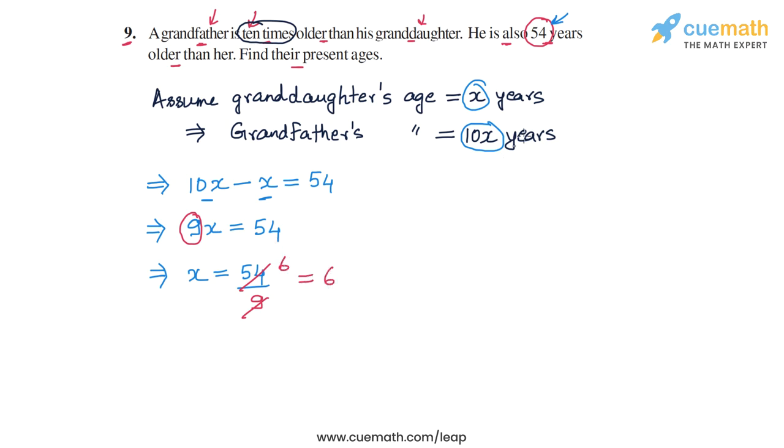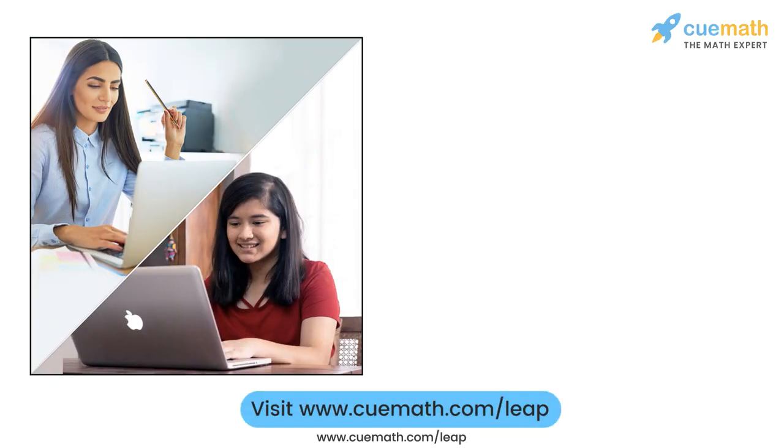This will give us the two ages: the granddaughter's age as 6 years and the grandfather's age as 60 years. Let's verify that this answer is correct. We see that the grandfather's age, 60, is 10 times the granddaughter's age, which is 6, and also the difference between the two ages is 54 as told in the problem statement. So their present ages are 6 years and 60 years, and this completes question number 9.